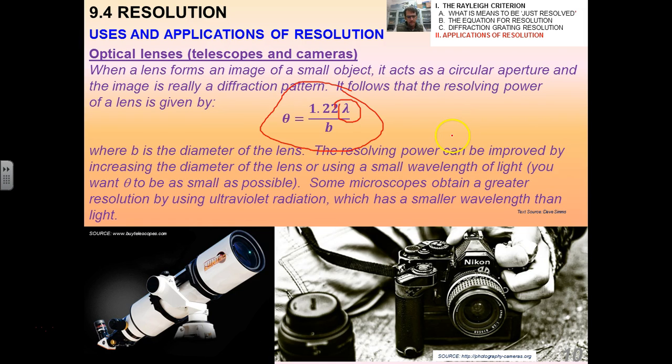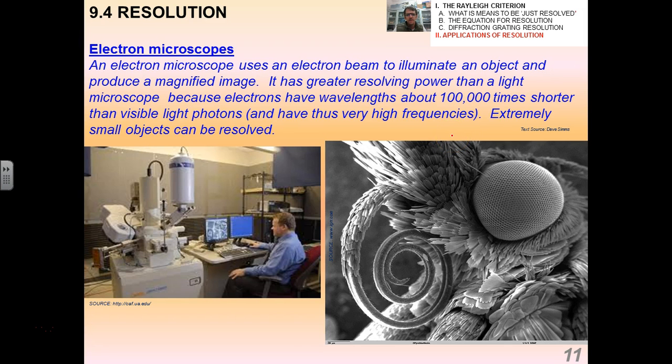Electron microscopes, these are really cool. It uses an electron beam to illuminate an object and produce a magnified image. It's got greater resolving power because electrons have wavelengths, and this is going into quantum physics a little bit. Turns out they're particles but they also have wavelengths and they're about a hundred thousand times shorter than visible light photons. They have super high frequencies and you can actually resolve extremely small objects like all of these details on a fly's head. That's pretty gross but really cool.